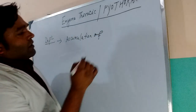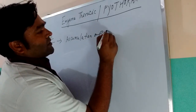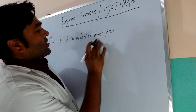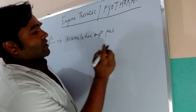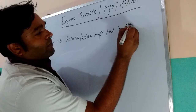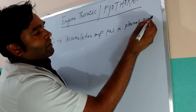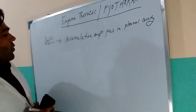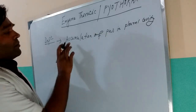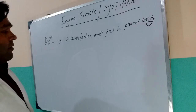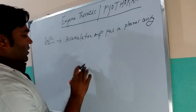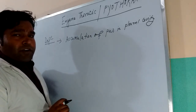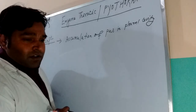From where does this accumulation of pus come? We will discuss this in the etiopathogenesis — accumulation of pus in the pleural cavity. Before going to etiopathogenesis, we will discuss the causes, which will be covered within the etiopathogenesis itself.